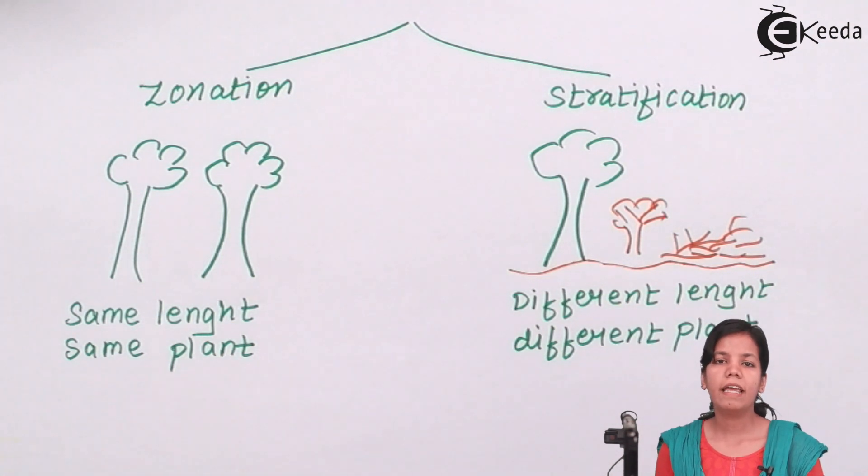Students, in this part of the chapter, we have studied how diversified an ecosystem pattern could be. It could be of zonation type or of stratification type. I hope you all are clear with the concept of zonation and stratification which is based on ecosystem pattern. Thank you.